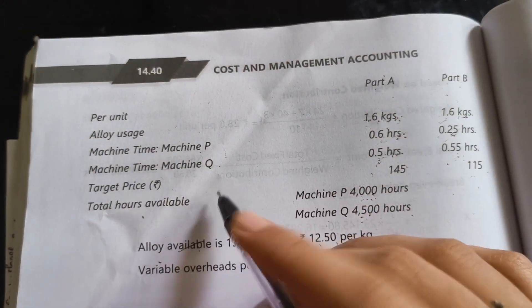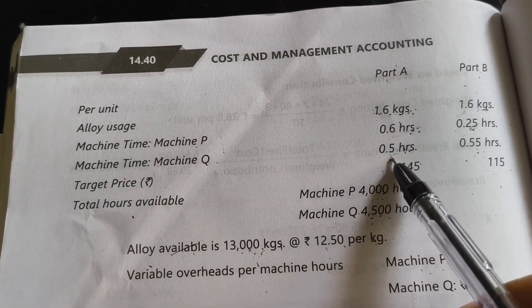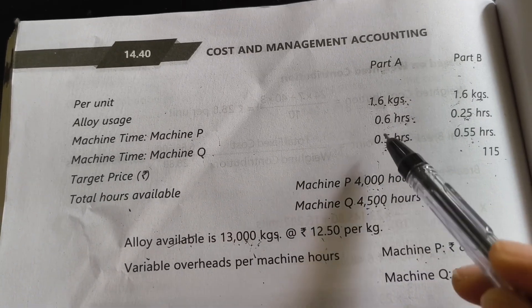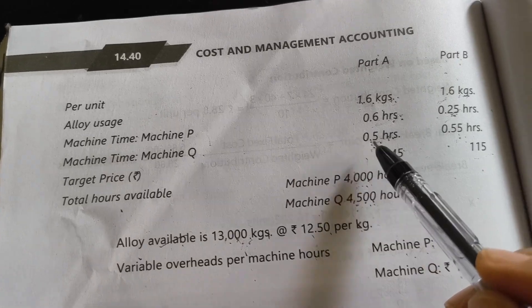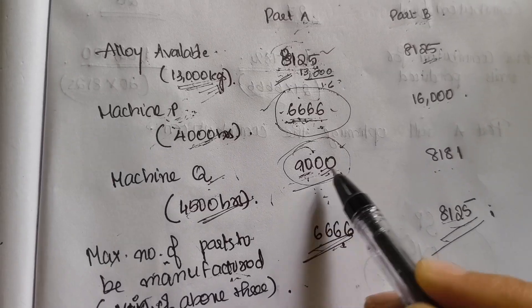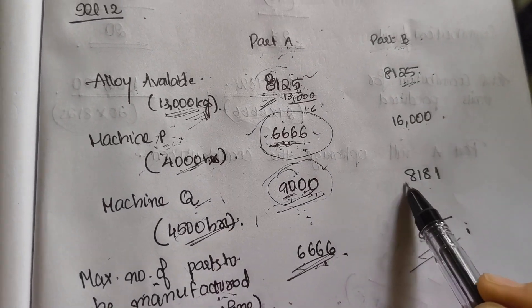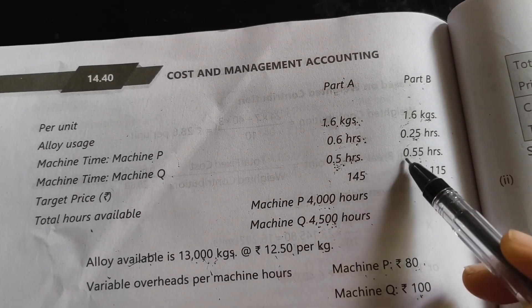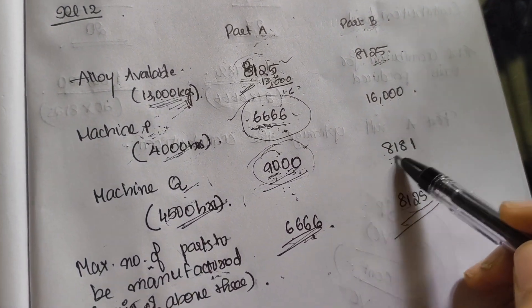Next, machine Q. The total hours available is 4,500. To make part A, 0.5 hours per unit is required, so 4,500 divided by 0.5 gives 9,000 units. For part B, 0.55 hours per unit is required, so 4,500 divided by 0.55 gives 8,125 units of part B that can be produced.